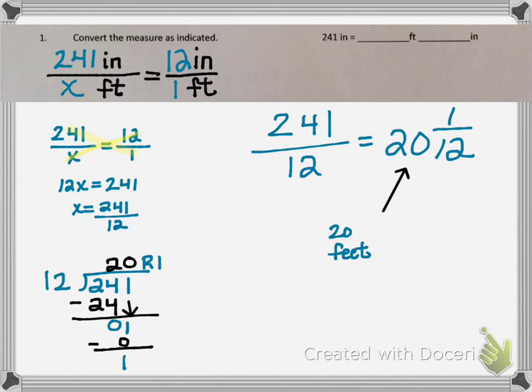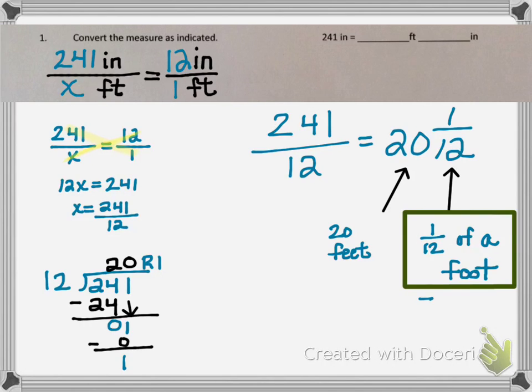The whole number 20 means I can get 20 whole feet. The 1 twelfth means I have 1 twelfth of a foot left over, and 1 twelfth of a foot is equal to 1 inch, since there's 12 inches in a foot. So my final answer is 20 feet and 1 inch.